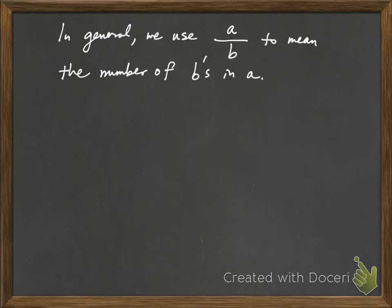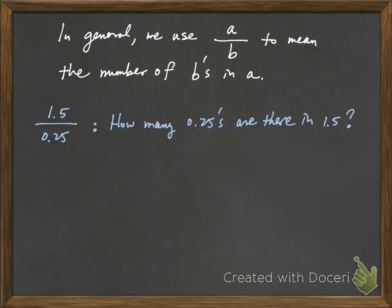Let me give you another example for this. I can think of the expression 1.5 divided by 0.25 as asking how many 0.25's there are in 1.5. Of course, you can answer this question simply by carrying out the division process, but you can also answer this question visually on a real number line.